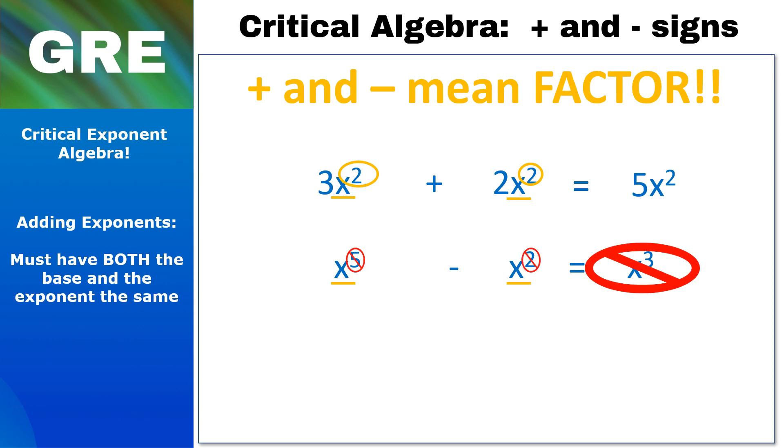We can't subtract that directly because while we have the bases the same, the exponents are different. So instead we need to factor. That means we look at what we have that's the same on each side of the minus sign. And in this case we have x² on each side, so we kick the x² out to the left and we put what's left over inside the parentheses.